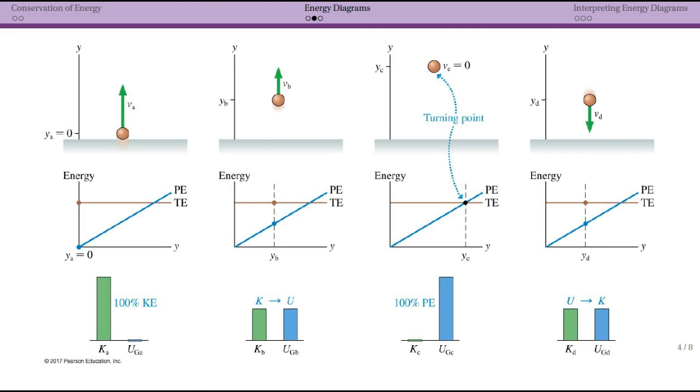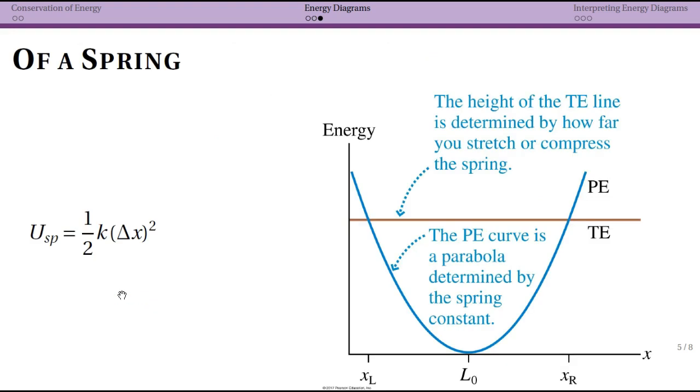So the potential energy of a spring is going to look like a parabola, since we have that the potential energy is one-half times the spring constant, lowercase k, times this Δx in this case. And remember that this